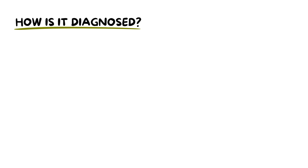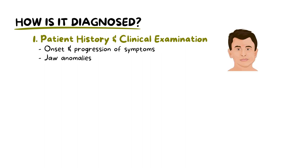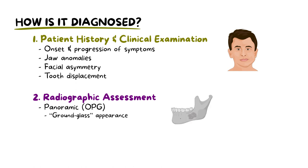Diagnosing fibrous dysplasia in a dental setting requires a multifaceted approach. It starts with a detailed patient history, focusing on the onset and progression of symptoms. This is followed by clinical examination, where the clinician evaluates signs such as jaw anomalies, facial asymmetries and tooth displacement. Radiographic assessment is the next crucial step; tools like panoramic and periapical radiographs highlight the condition's characteristic ground glass appearance in the jaws. For a more granular view, cone beam CT scans map out the depth and spread of the dysplasia within the jaw structures.